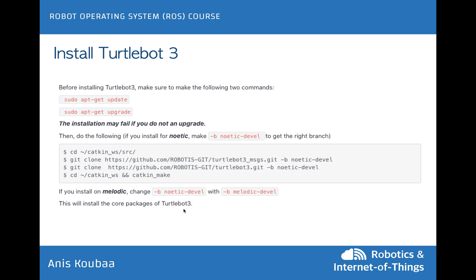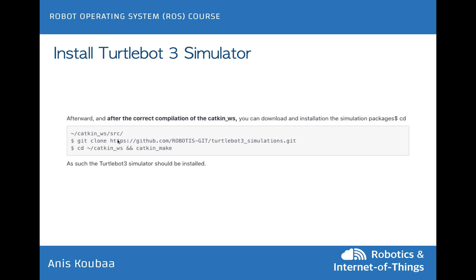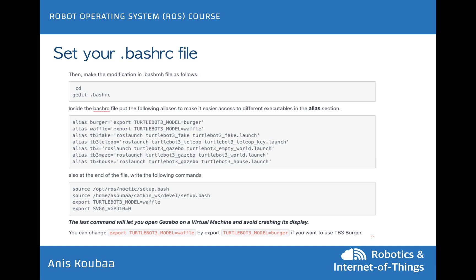This installs all the core packages of TurtleBot3 and allows you to run TurtleBot3, but not the simulator. For the simulator, after successful catkin_make compilation, go back to the src folder in the catkin workspace, git clone the TurtleBot3 simulator repository, then go to the catkin workspace and run catkin_make again. This must be done in this order — if you try to install the simulator without first installing the core and message packages, you will get compilation errors.